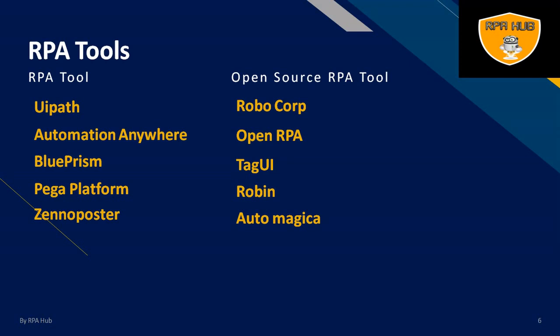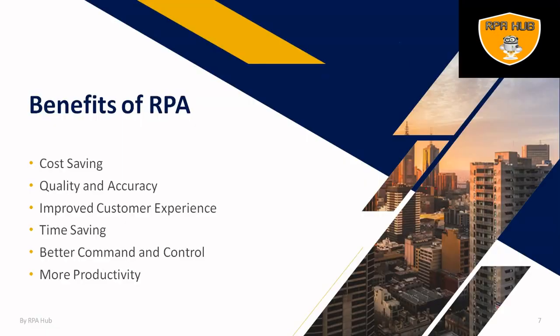When we consider open source RPA tools, these are basically open for everyone and anyone can make changes in the tool for improvement and enhancement. Robocop, OpenRPA, TagUI, Robin, and Automatica are the five tools which are globally used and accepted by global organizations as open source RPA tools.